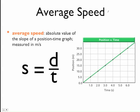Okay, so average speed. Speed is the absolute value of the slope. There is no sign, okay? There's no positive, there's no negative. It is a scalar quantity. This is really big. Speed is scalar.